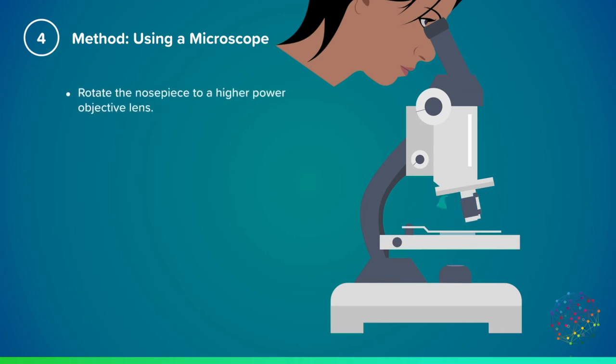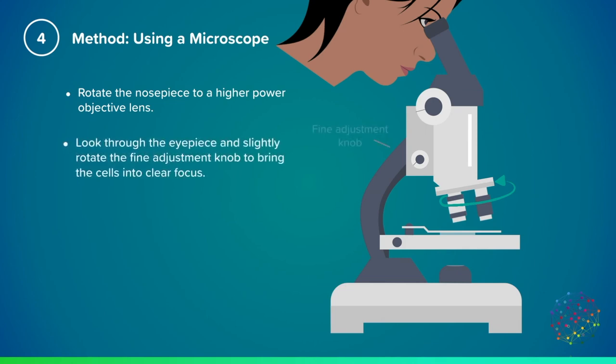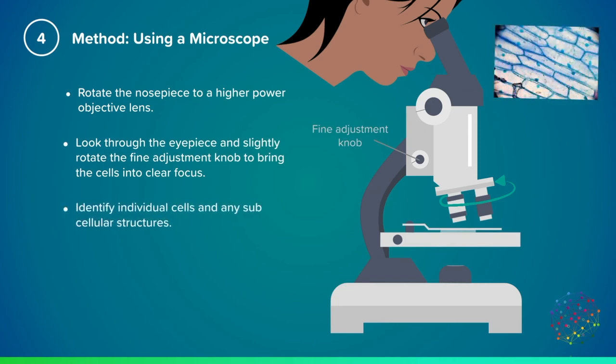Now rotate the nose piece to a higher power objective lens. Look through the eyepiece again and slightly rotate the fine adjustment knob, and this will bring the cells into clear focus. And you should notice at a higher magnification, you can see the cells in more detail, and should be able to identify some sub-cellular structures, such as the cell wall and the nucleus.